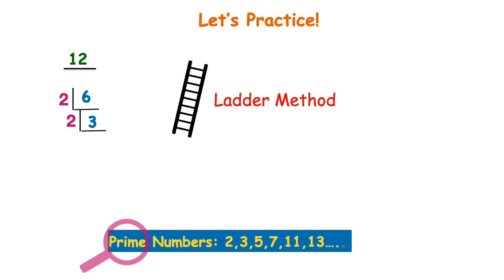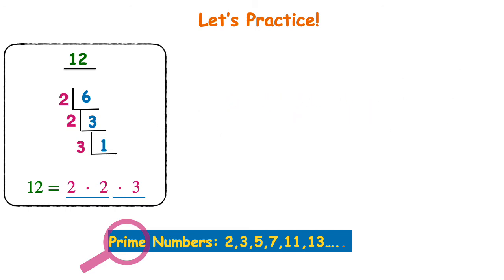I need to keep going down the ladder. Looking at that 3: 2 does not go into 3, but the next smallest prime number, 3, does. So 3 times 1 is 3. When I reach 1 at the bottom of the ladder, I'm done. All of my prime factors are sitting on the outside to the left: 2 times 2 times 3. I can double check: 2 times 2 is 4, and 4 times 3 is 12. That is the ladder method.